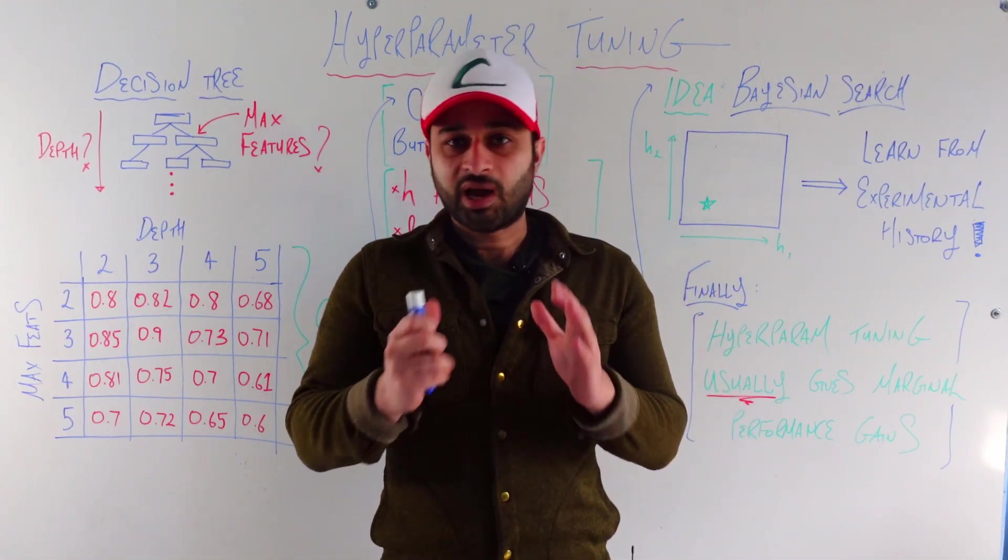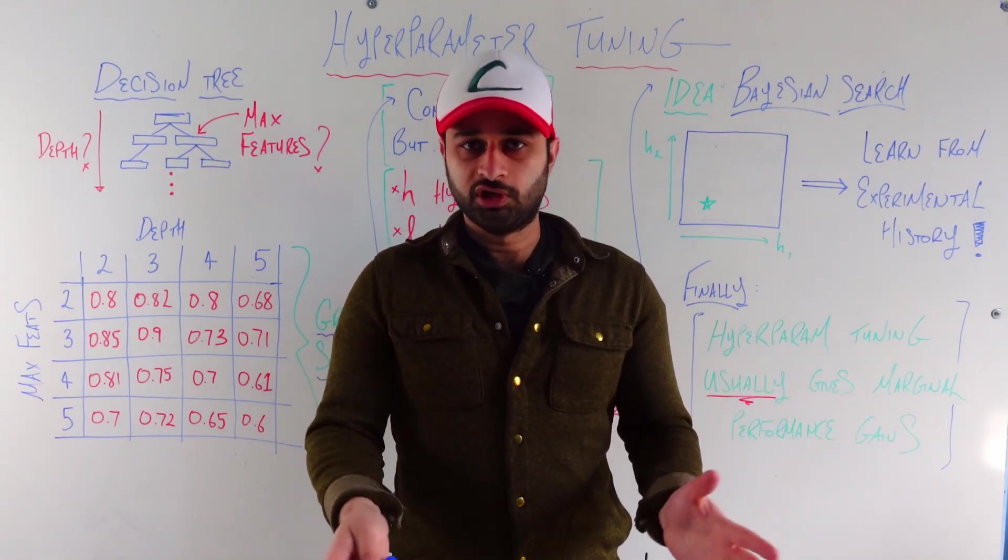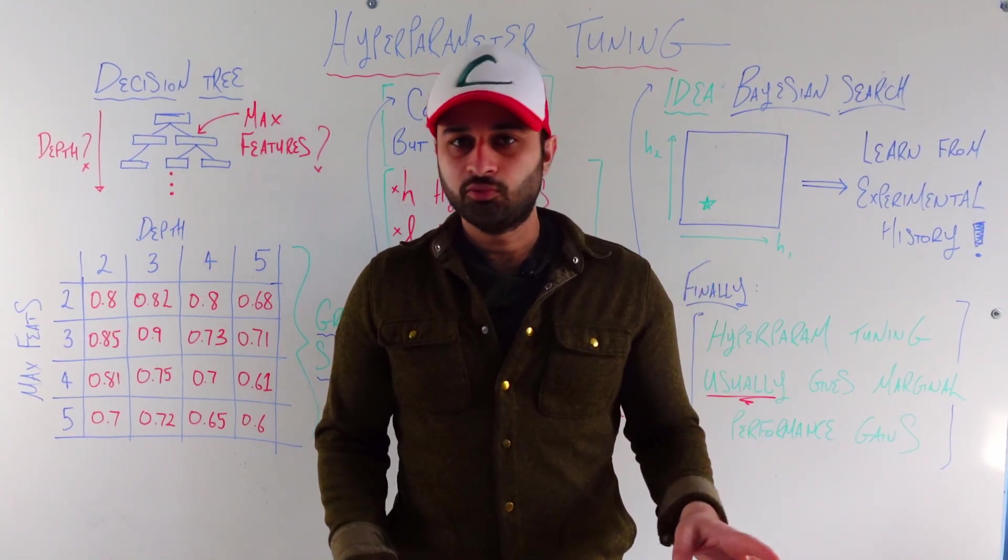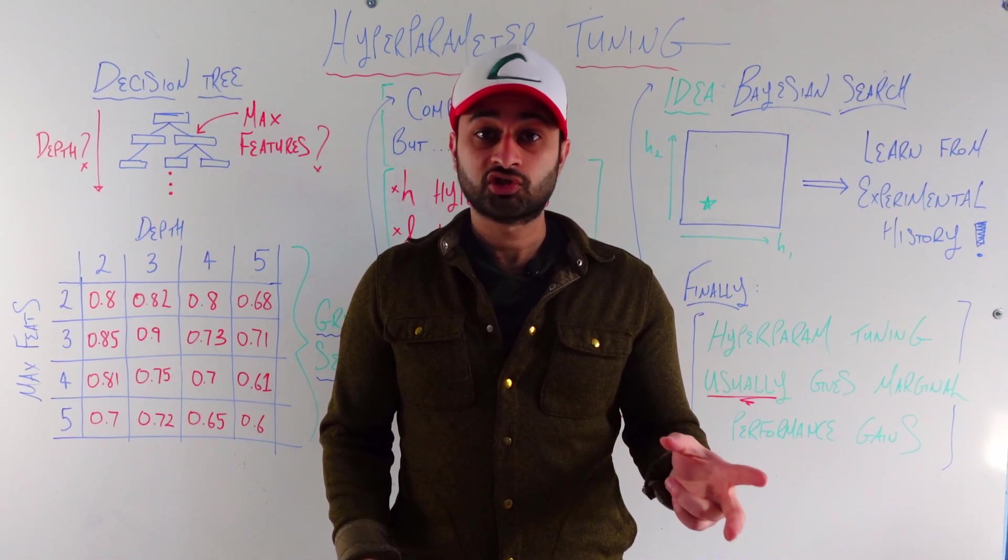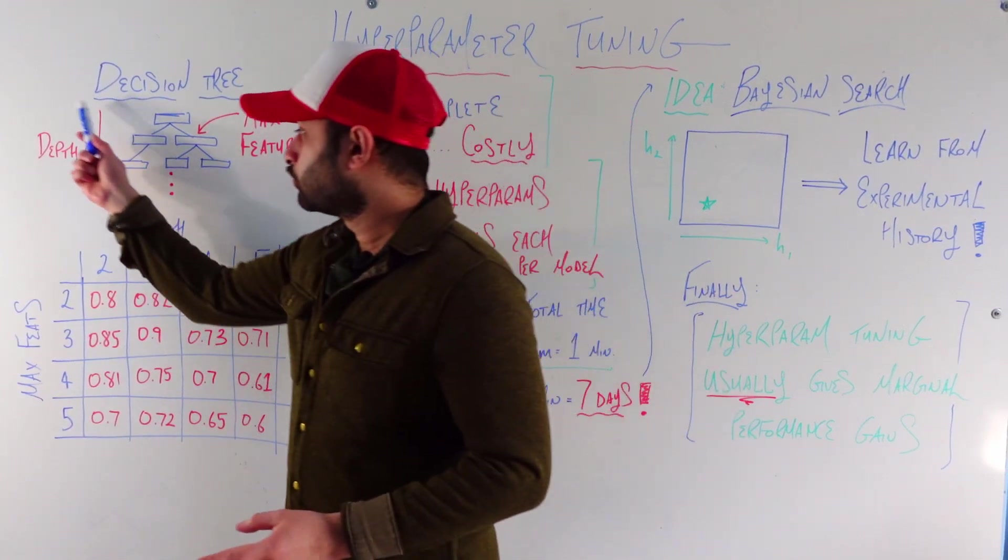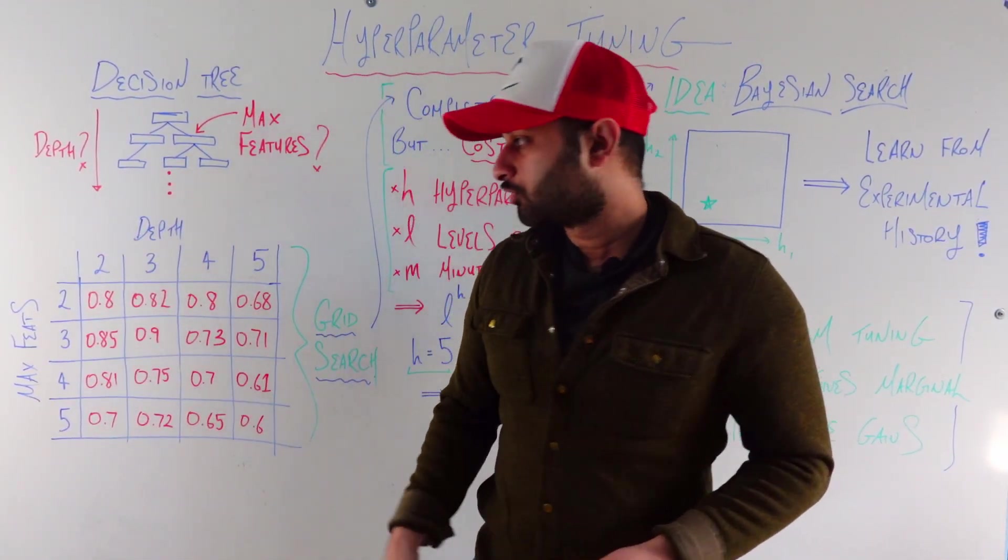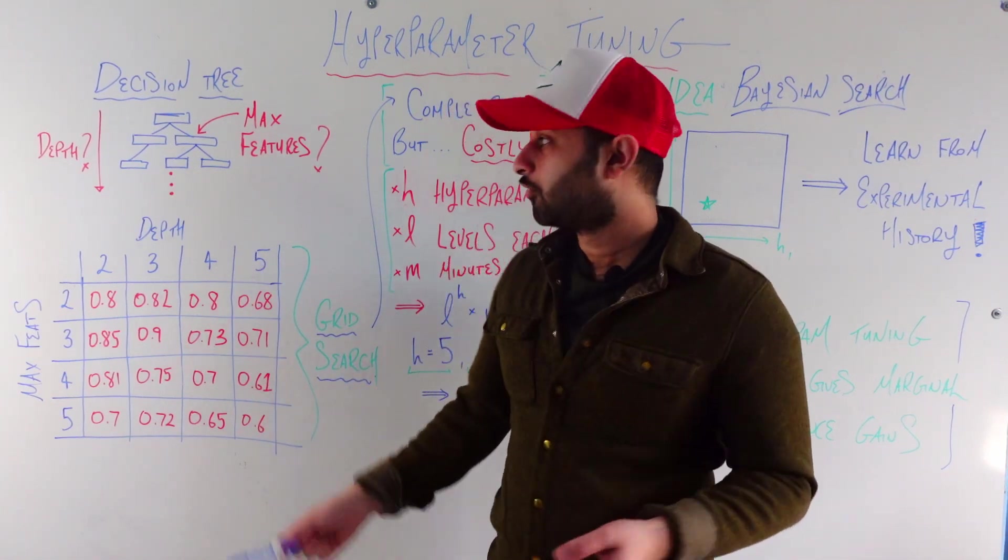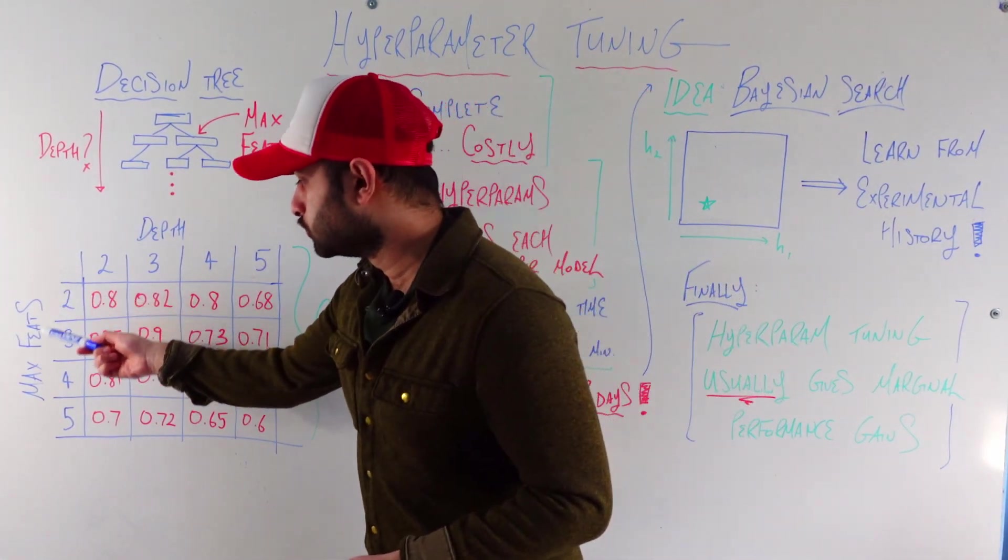Now that we understand what a hyperparameter is, and why it's important to tune it, how do we actually do this? The most brute force, the most easy way to understand, is called grid search. So we pick some possible candidates for maximum depth. Here we're choosing either 2, 3, 4, or 5. And we pick some possible candidates for maximum number of features. Again, 2, 3, 4, or 5.